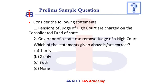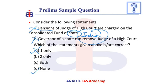Now let us solve this question. Consider the following statements: Statement 1 — Pensions of a Judge of a High Court are charged on the Consolidated Fund of a State. Statement 2 — Governor of a State can remove a Judge of a High Court. The correct answer is D — None. Statement 1 is wrong because pensions are charged on the Consolidated Fund of India, not on the State; only the salaries are charged on the Consolidated Fund of the State. Statement 2 is also wrong because the Governor cannot remove a Judge — rather, only the President, on the address of the Parliament, can remove the Judge of a High Court.